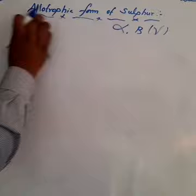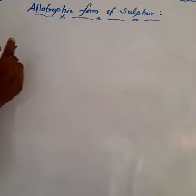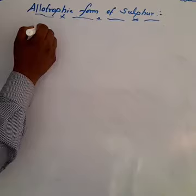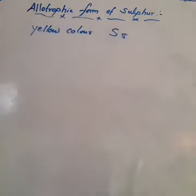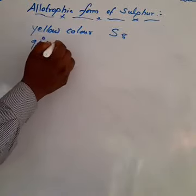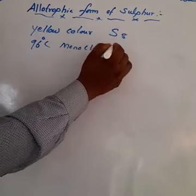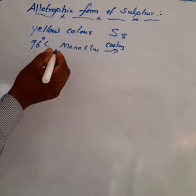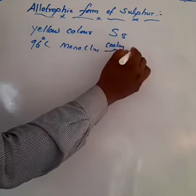Rhombic sulfur, also called alpha sulfur, is the most stable allotropic form at room temperature and pressure. Its crystals are yellow and it is composed of S8 molecules. On heating at 96°C, it converts to monoclinic sulfur. Cooling monoclinic sulfur below 96°C converts it back to rhombic sulfur.